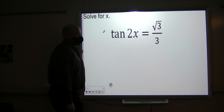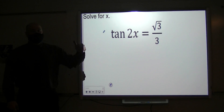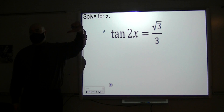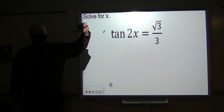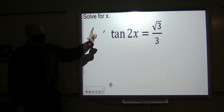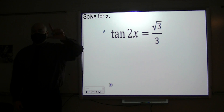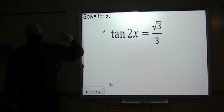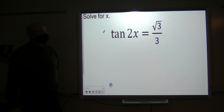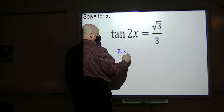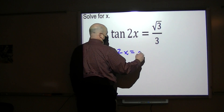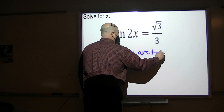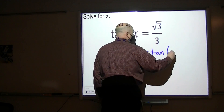Bottom line: we still want to write everything in terms of sine, cosine, or tangent if possible. We still want to isolate the trigonometric term. Then we want to take the arc function of both sides.